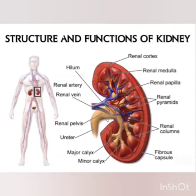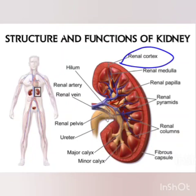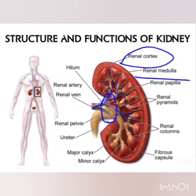Our bean-shaped kidneys are enclosed in a capsule. Underlying the capsule we find the external part of the kidney known as the renal cortex. The inner part is known as the medulla. Medial to the medulla is a fissure known as the hilum of the kidney. The hilum is the part where blood vessels and nerves enter. At the hilum, the renal artery and renal nerves enter the kidney and the renal vein leaves the kidney.